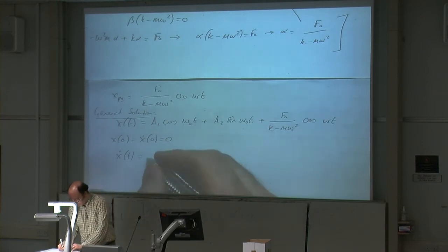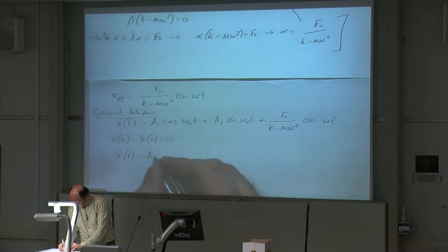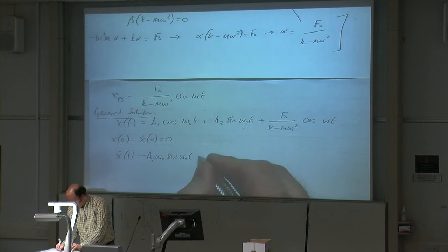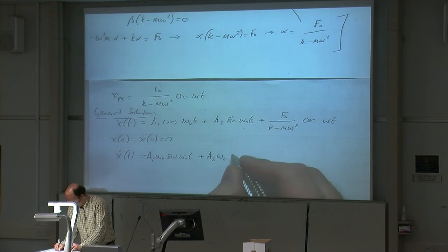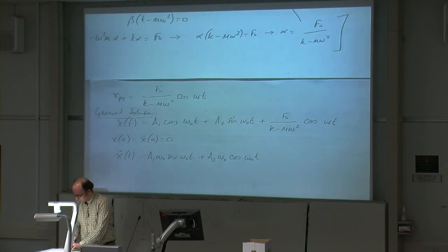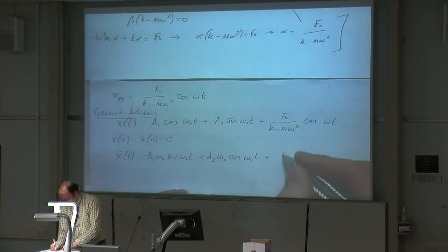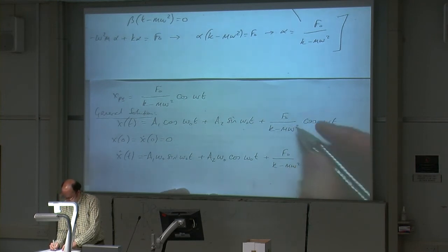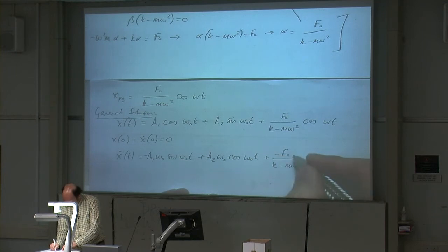So x-dot of t: we have a1 — omega-naught comes out, and cosine turns into minus sine — so we get minus a1 omega-naught sine omega-naught t, plus a2 omega-naught cosine omega-naught t. And then the last term: cosine turns into minus sine, so we get minus f0 omega divided by (k minus m omega squared) times sine omega t.